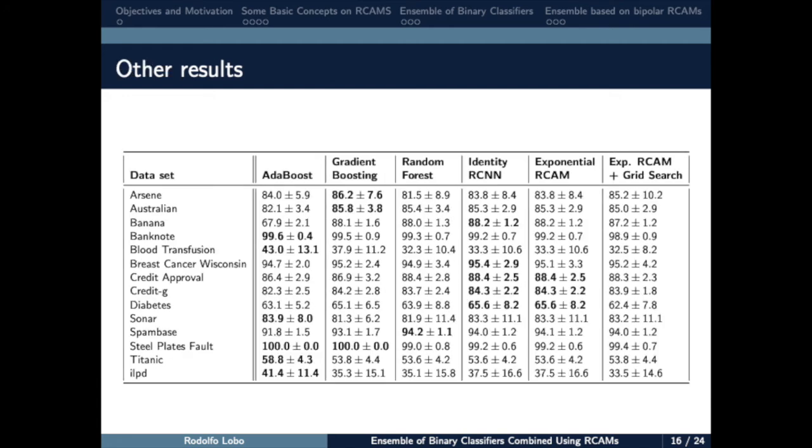In this second group of results, we can see the AdaBoost classifier and identity RCAM model have the best results. Observe that there exist some difficult problems, for example, blood transfusion with lower F-measure and others like steel plates fault, in which AdaBoost method apparently overfit. Three of the 28 problems were difficult to our model.